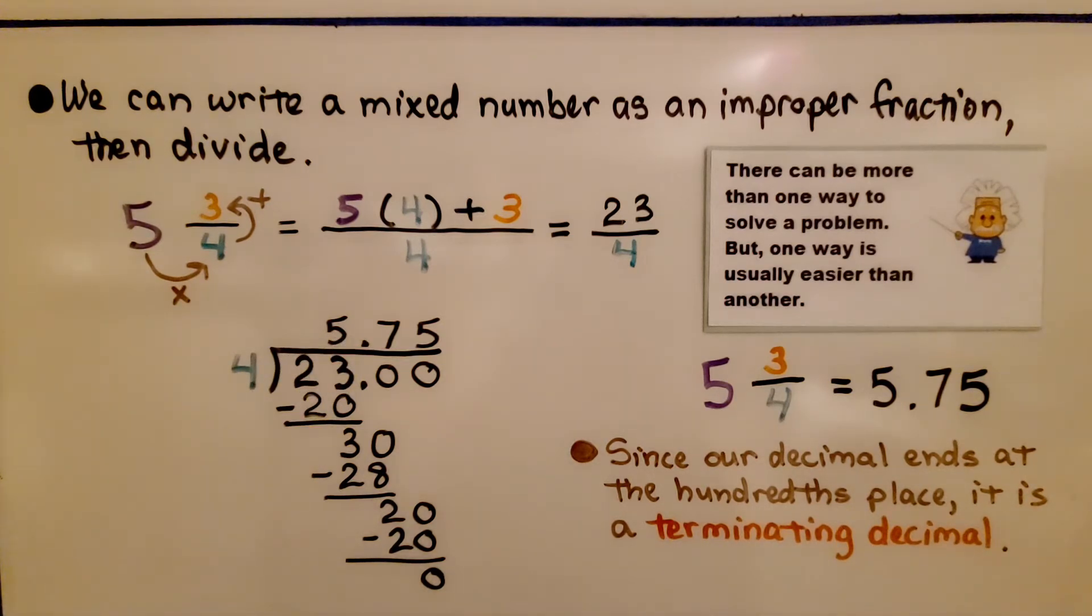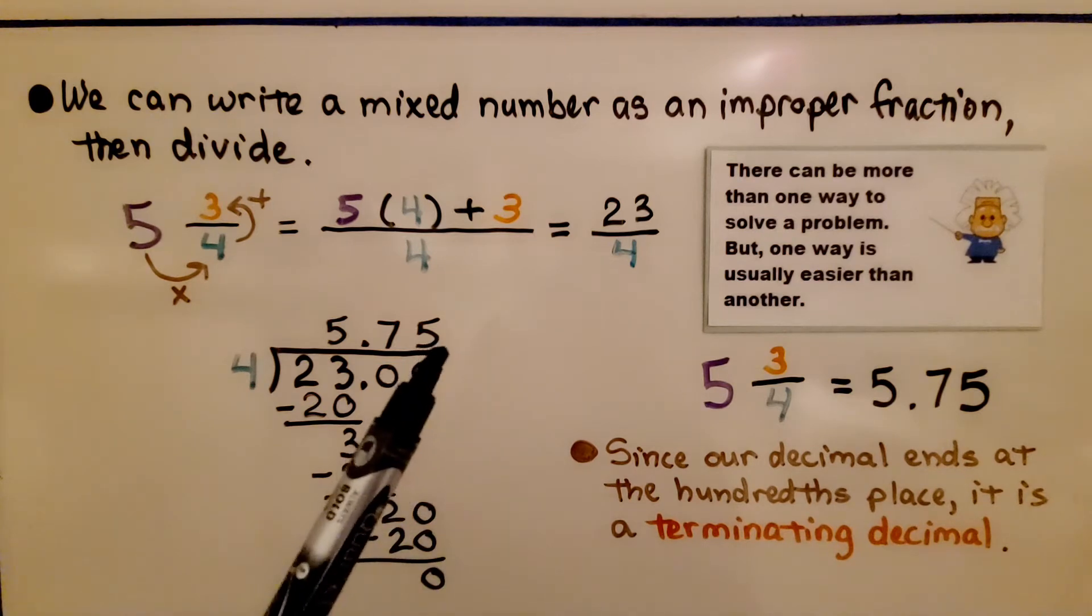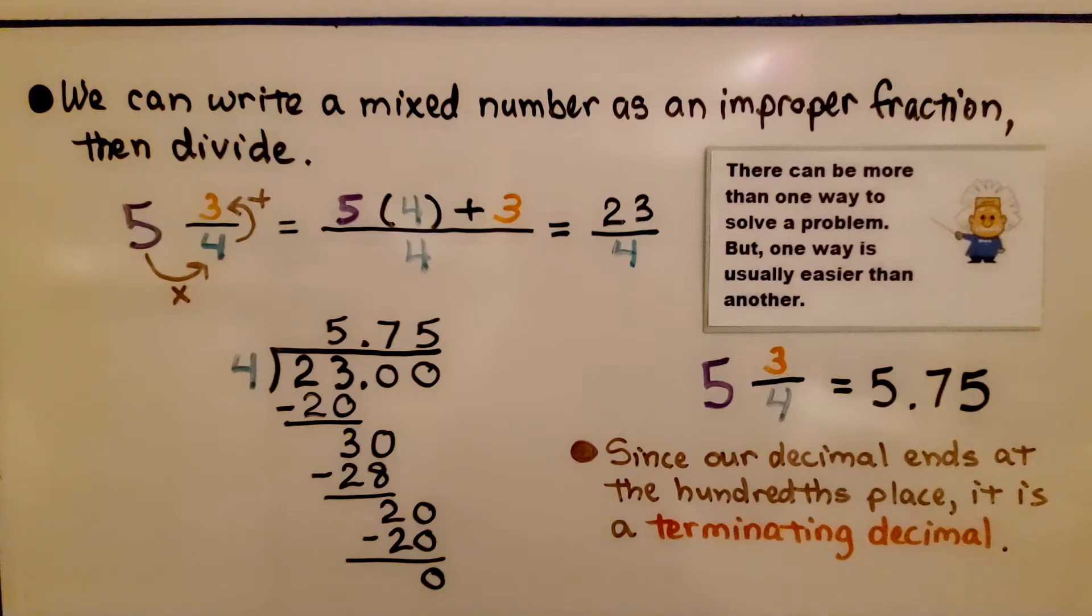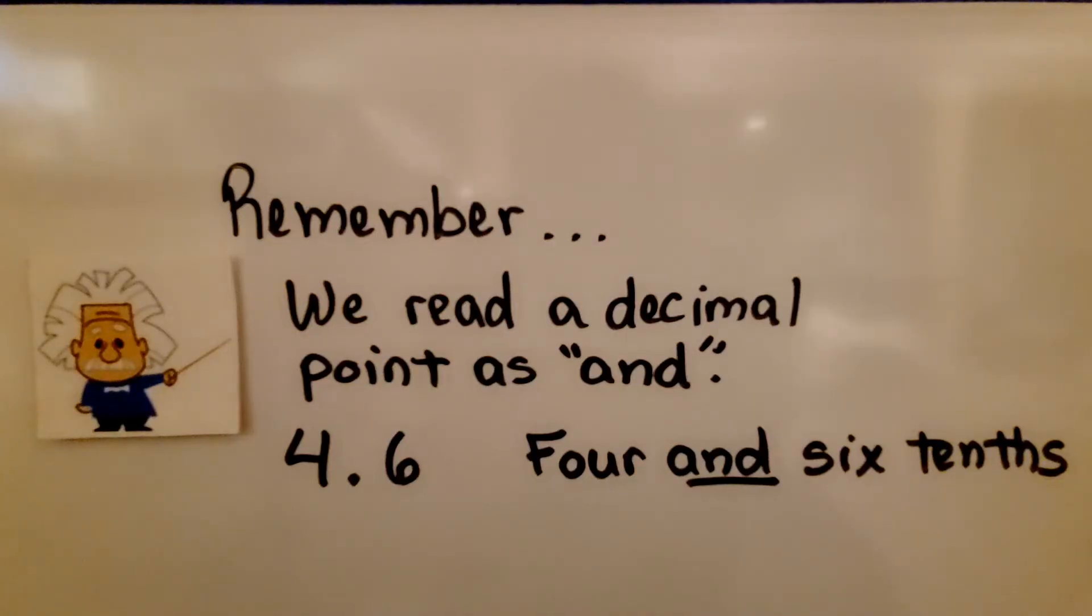Since our decimal ends at the hundredths place, it's a terminating decimal. Remember, we read a decimal point as AND. We see a 4, a decimal point, and a 6. It's read as 4 AND six-tenths.